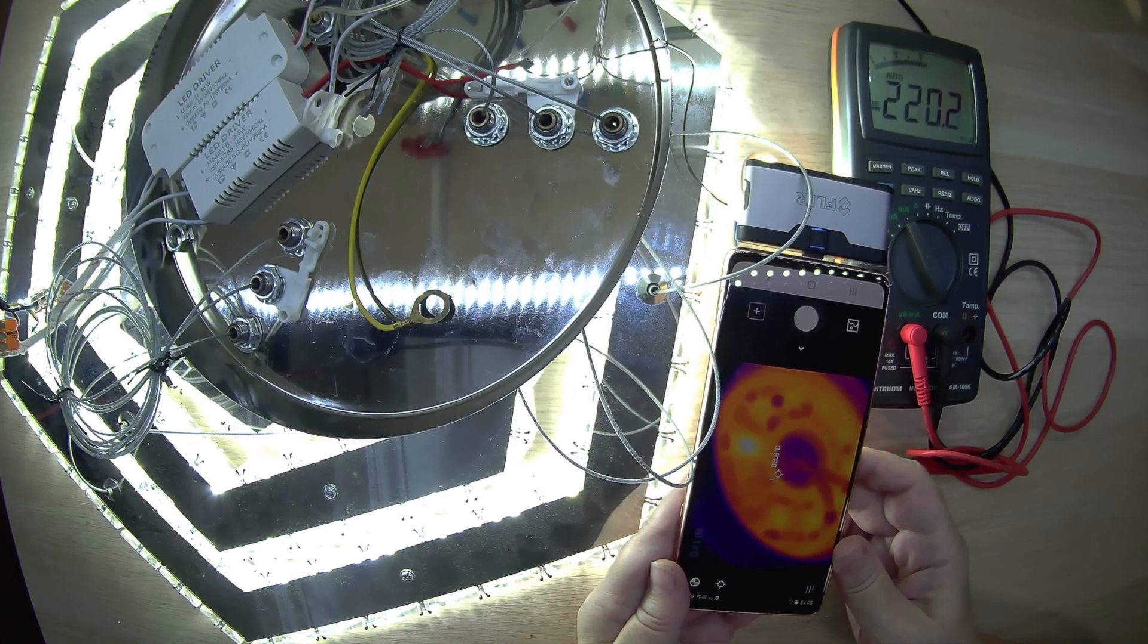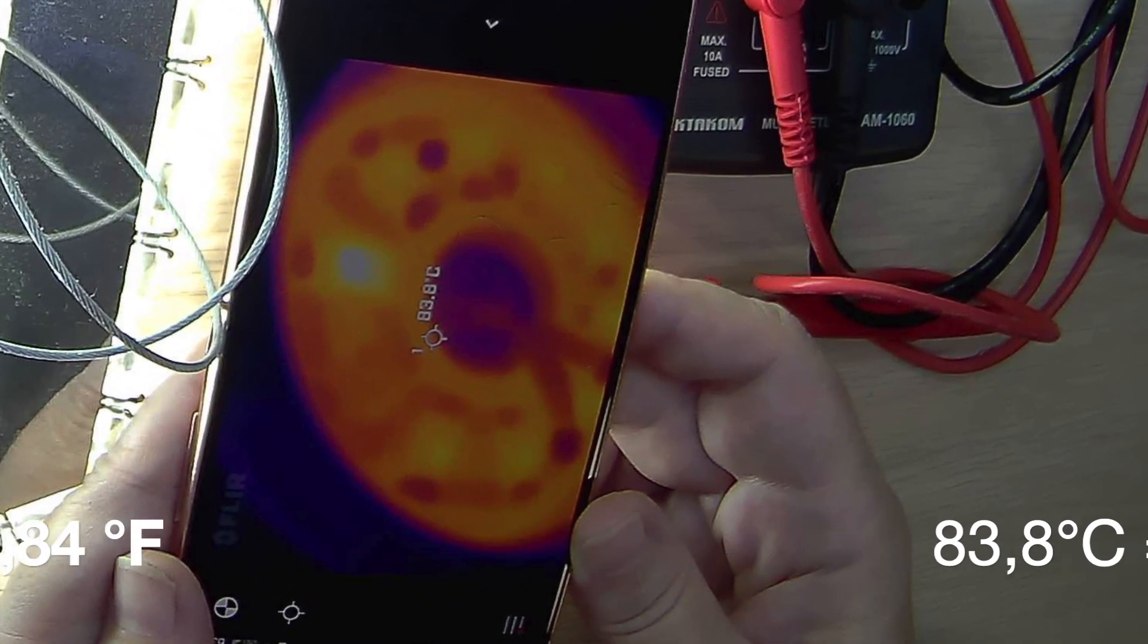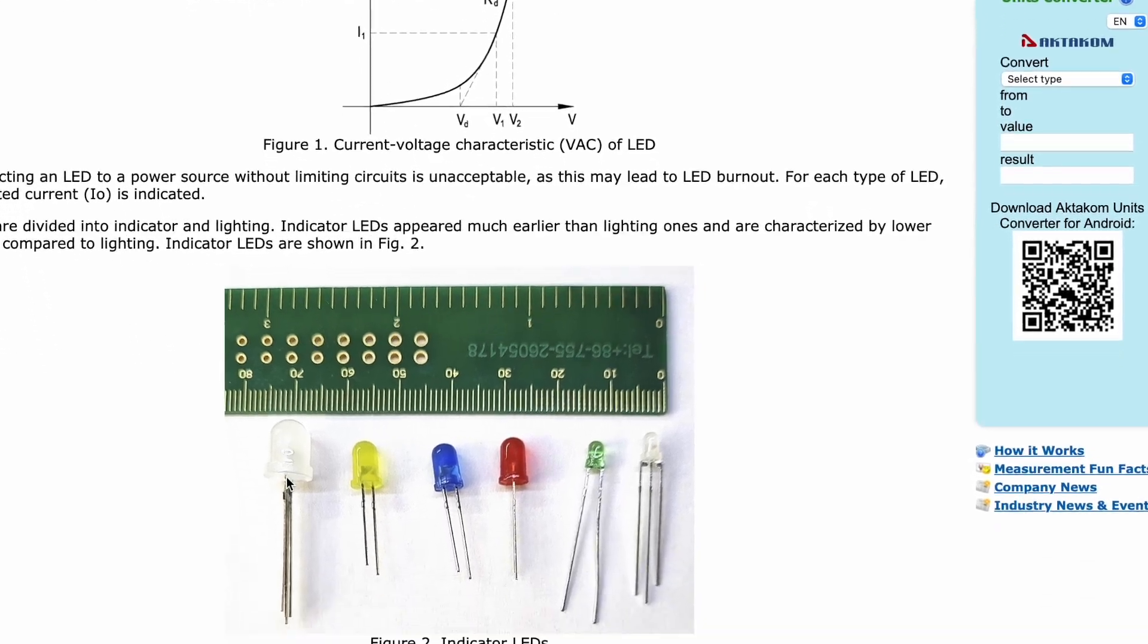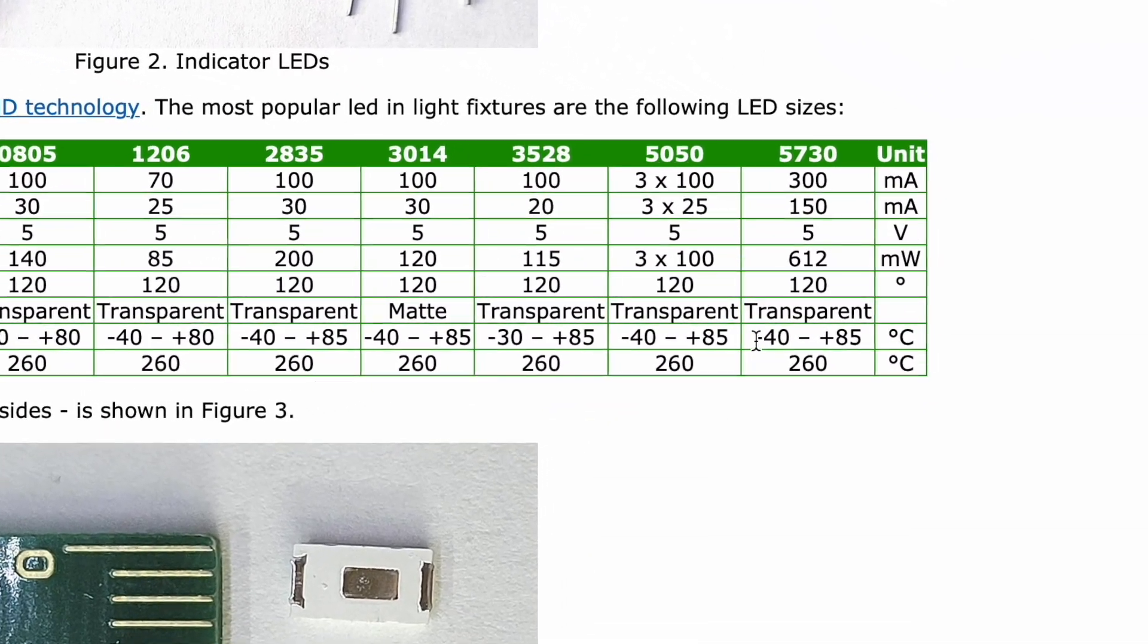But the LEDs of the ring operate at very high temperature, about 80 degrees Celsius. For information, the operating temperature for this type of LED is plus 85 degrees Celsius. So this section is incorrectly designed in terms of temperature.